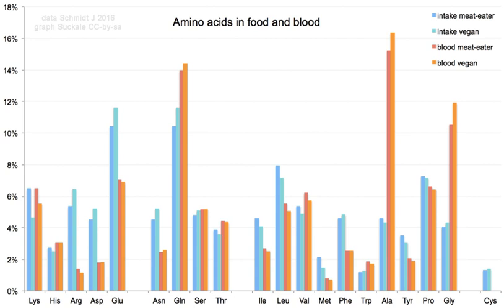The order in which the amino acids are added is read through the genetic code from an mRNA template, which is an RNA copy of one of the organism's genes. 22 amino acids are naturally incorporated into polypeptides and are called proteinogenic or natural amino acids. Of these, 20 are encoded by the universal genetic code. The remaining two — selenocysteine and pyrrolysine — are incorporated into proteins by unique synthetic mechanisms.